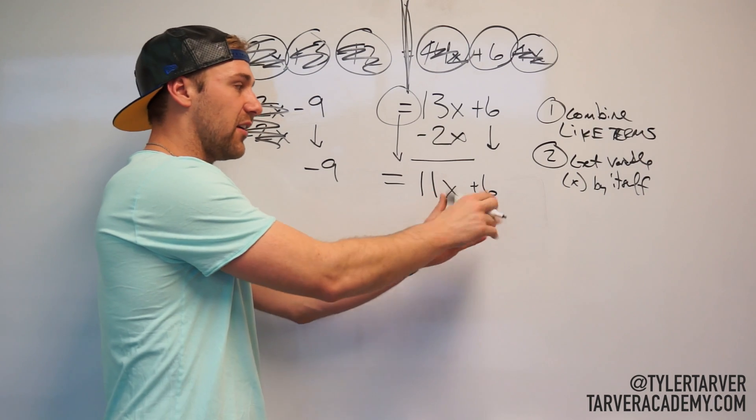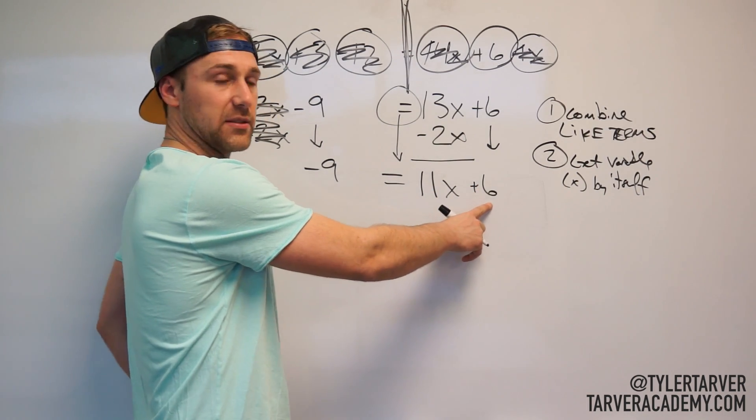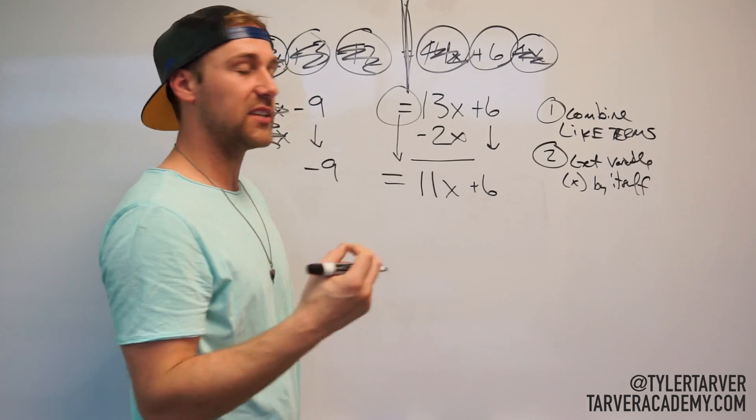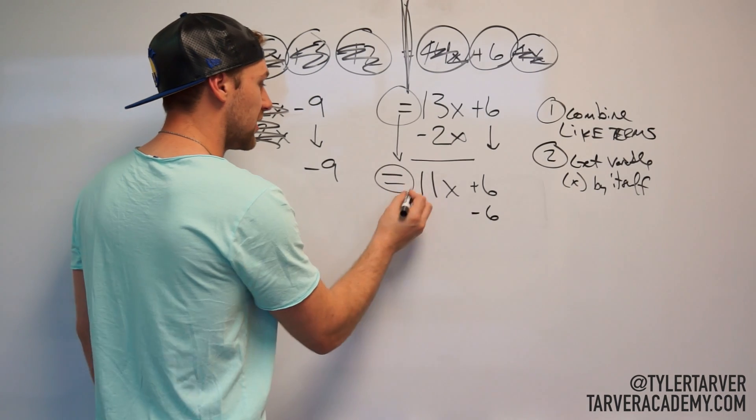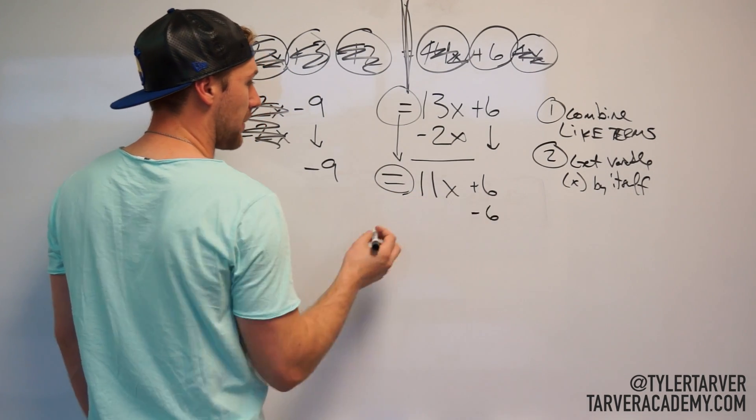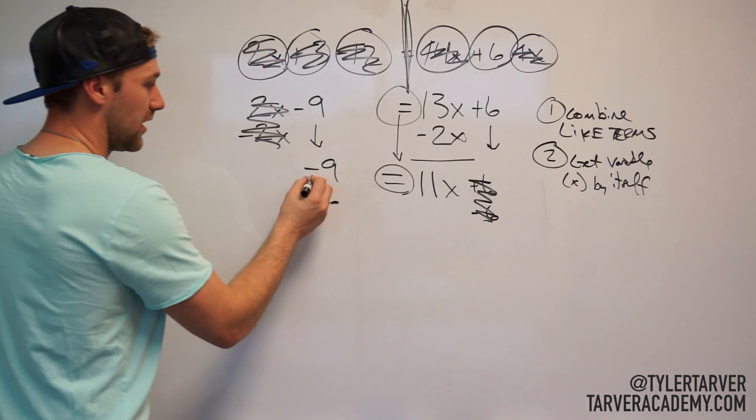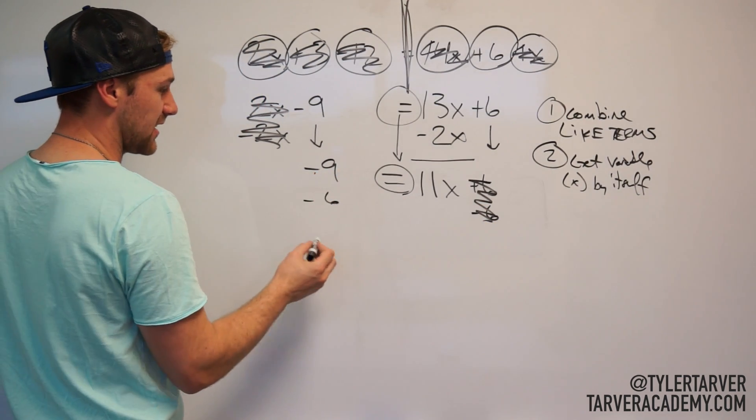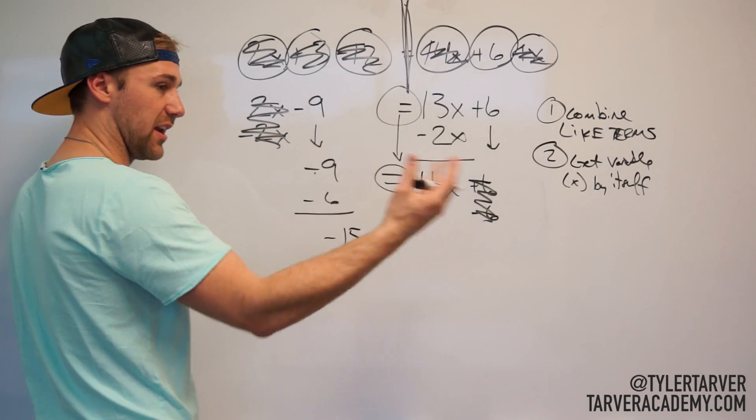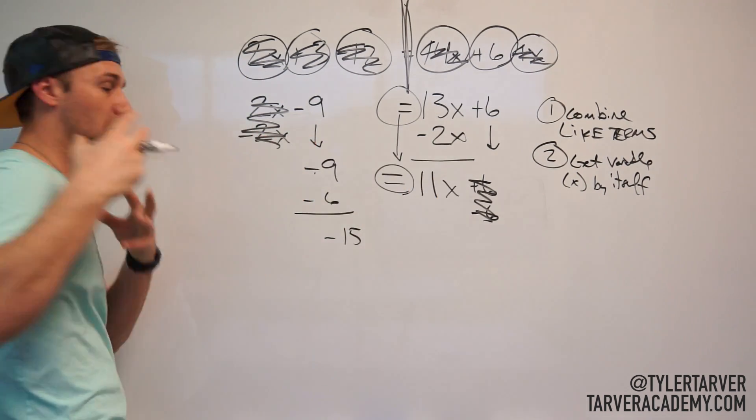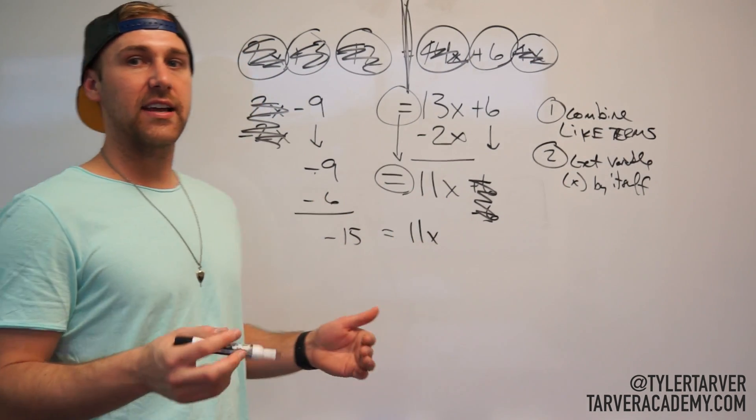Now I got my x's over here, now I need to get my regular numbers over here. Regular number over here is positive 6, the opposite of positive 6, negative 6. Why am I doing the opposite? Because it's going across the equal sign, so I got to do the opposites. Positive 6 minus 6, that becomes 0 and cancels out. Negative 9 minus 6, negative 15—becomes a bigger negative because you're in negative 9 already and then you're taking 6 more away from it. Equals, and that stays the same, 11x.